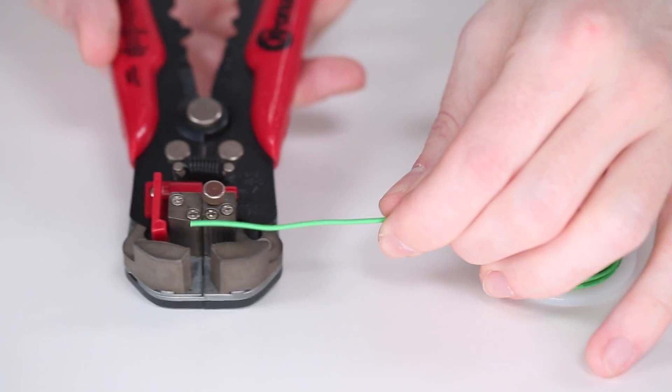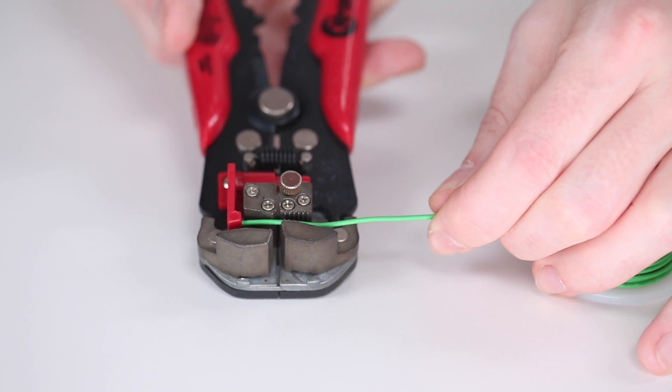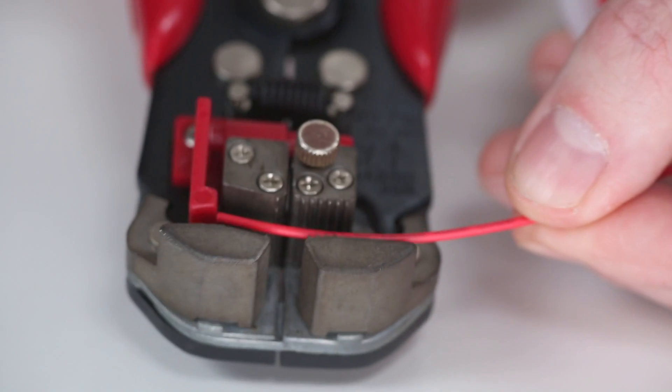You can also find automatic wire strippers, which are great for preparing large batches of wire with uniform lead length.